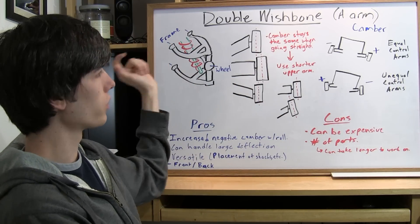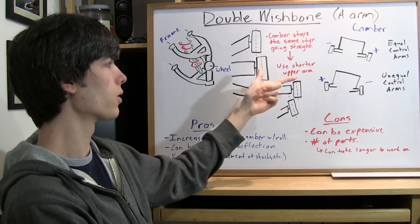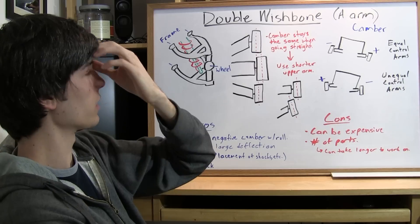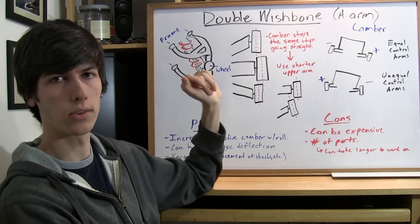So double wishbones with the unequal control arms, the top one being slightly shorter, is a great suspension setup.